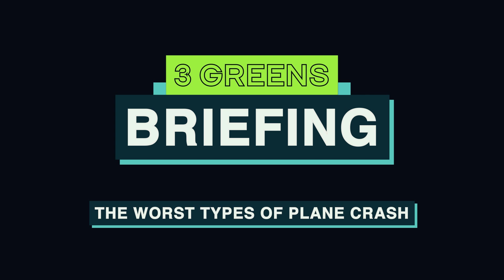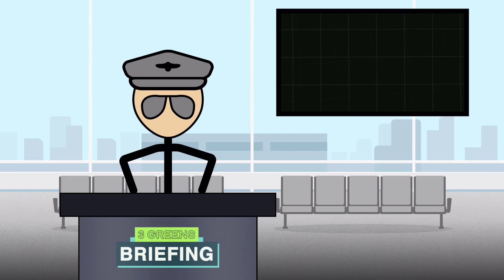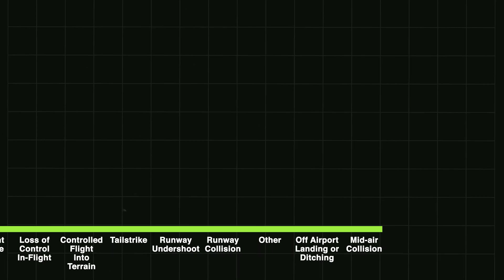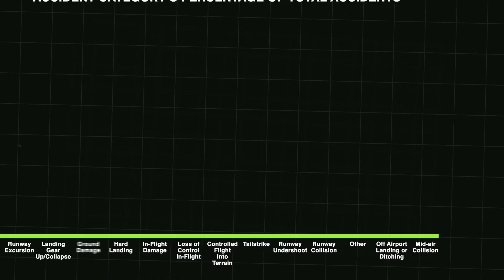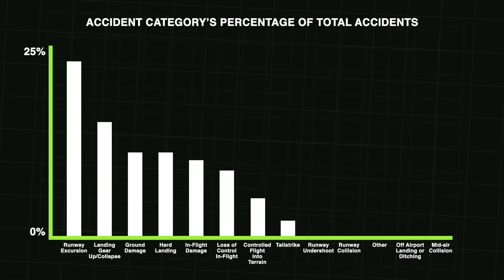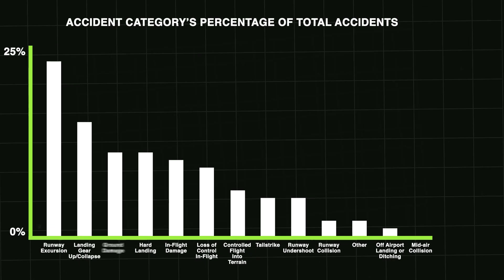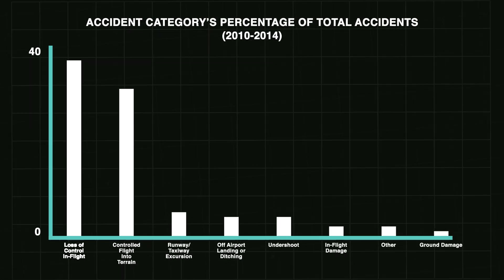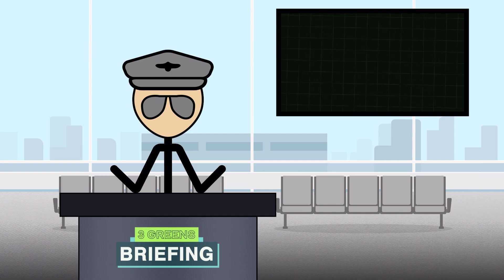First, we need to determine what the deadliest accidents are. IATA, the International Air Transport Association, neatly defines 13 categories in relation to aircraft accidents. We can show which ones produce the most accidents and which ones are the most fatal. However, both of these graphs are flawed.